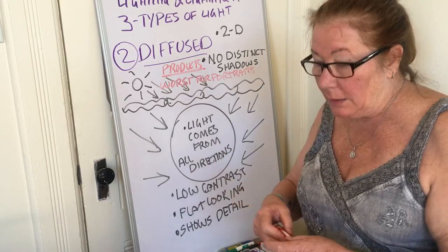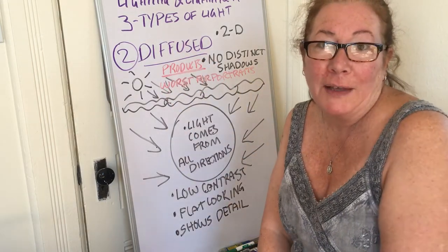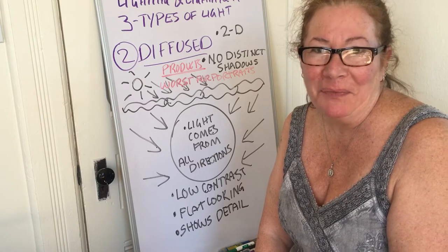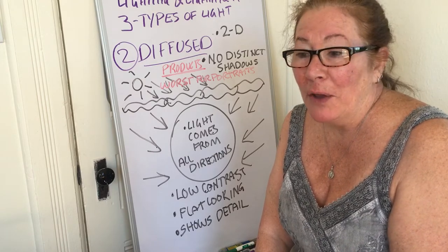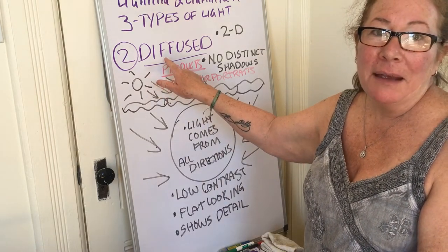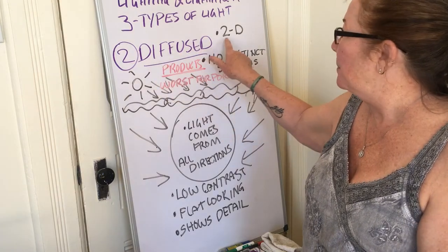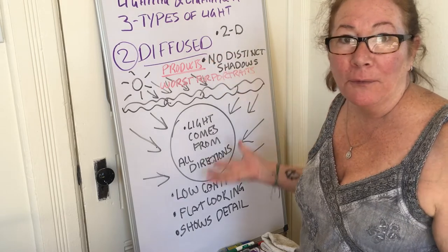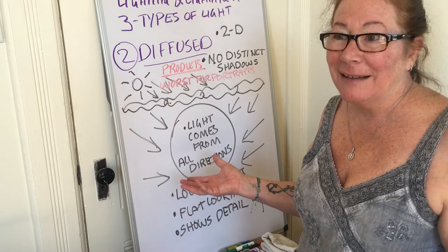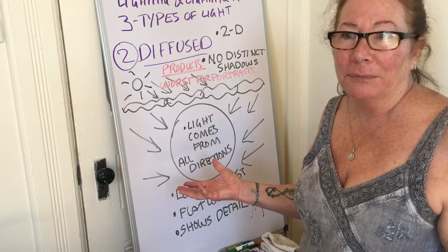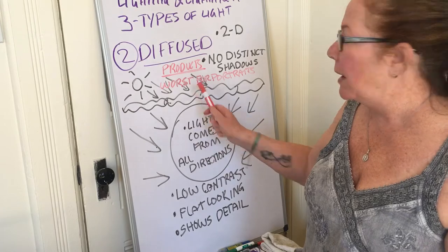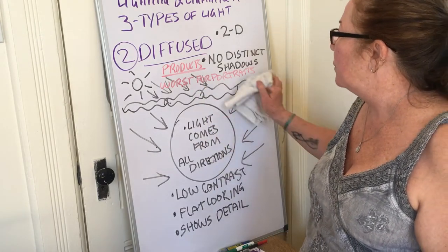Why is diffused light worst for portraits? Well, how many of you actually like your driver's license photo? Usually only one or two people say they like their photo. The kind of lighting they use at the DMV is diffused, and it makes our faces look really flat and two-dimensional. It's just not a flattering type of light for portraits. So normally we try to avoid diffused light for portraits. Great for products, not so great for portraits.